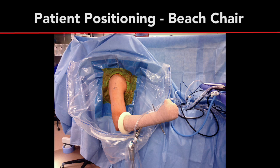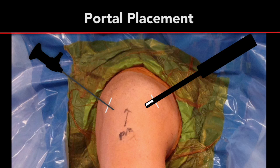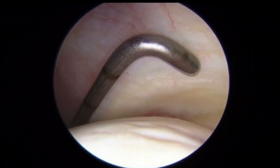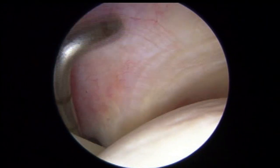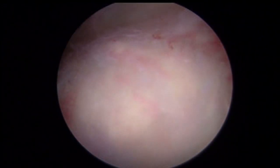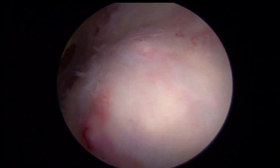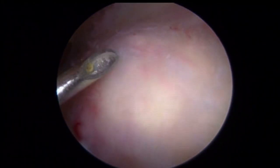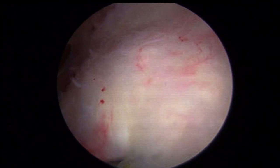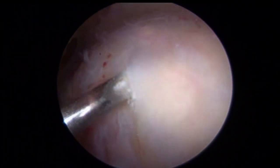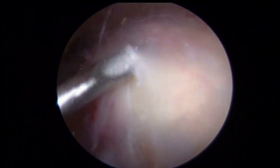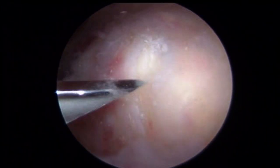The patient was placed in the beach chair position for a right shoulder arthroscopic excision of calcific tendinitis with rotator cuff debridement versus repair. Diagnostic arthroscopy revealed that the articular surface of the rotator cuff tendon was found to be intact. All intraarticular pathology should be addressed at this time. Following an adequate subacromial decompression, the bursal side of the rotator cuff is examined. Gentle probing demonstrates that the supraspinatus tendon is softer than normal.